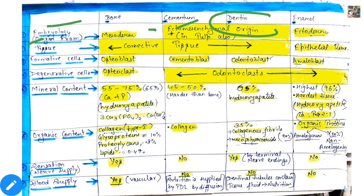Such as bone — mesoderm — and enamel. What is dentine? Ectomesenchymal origin. Then what is dentine? Connective tissue. Formative cell — where is dentine? Odontoblast.